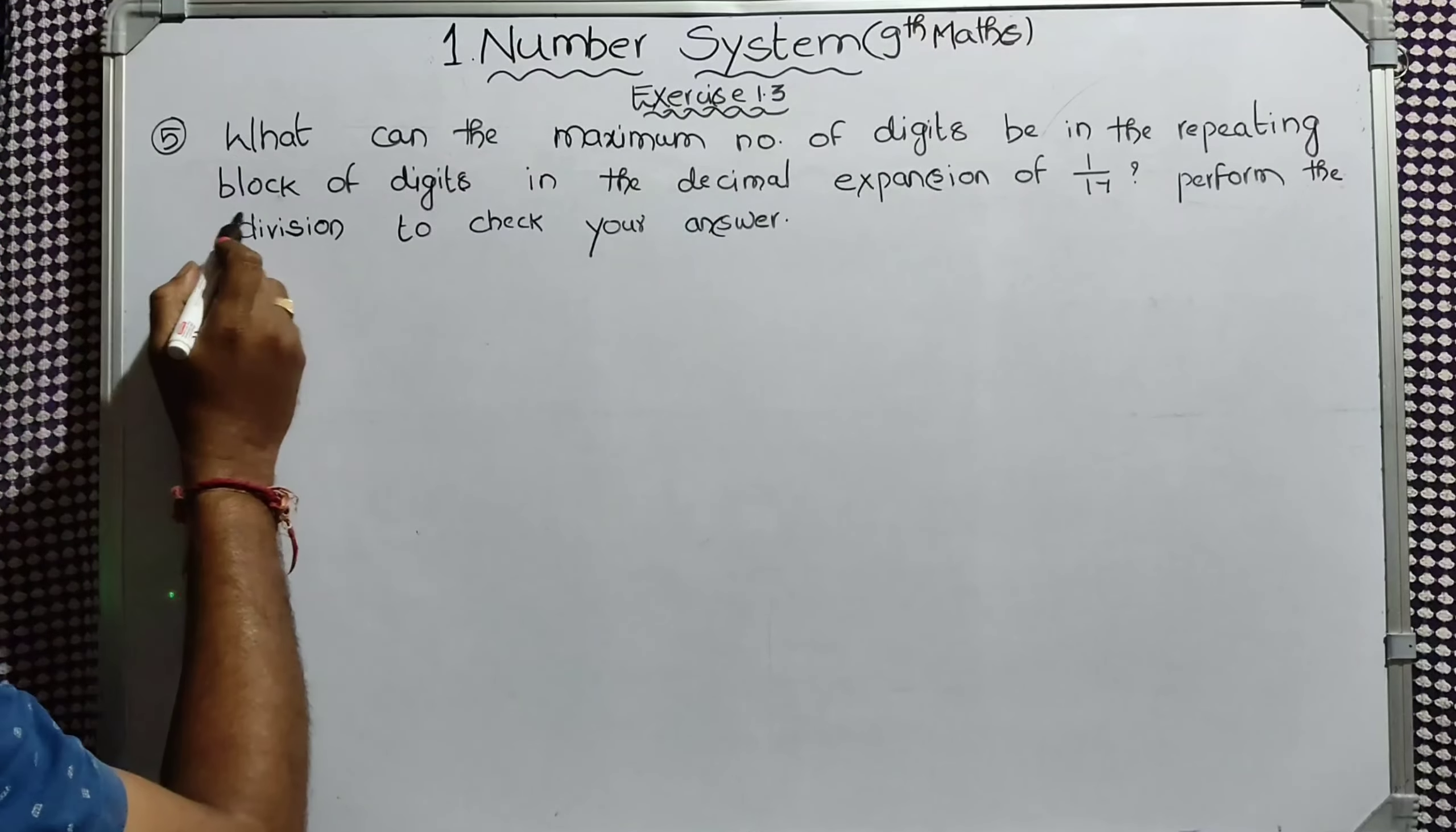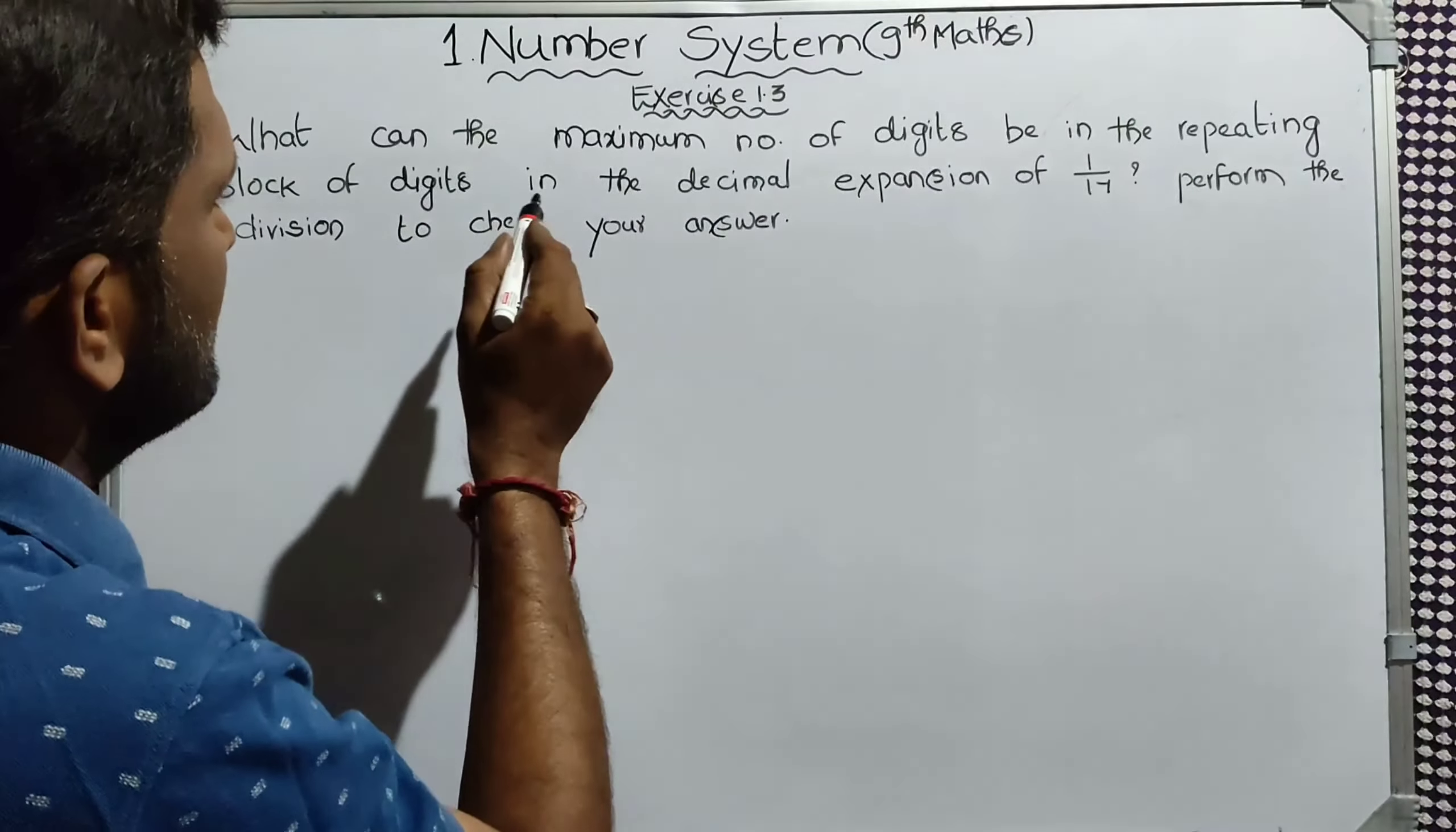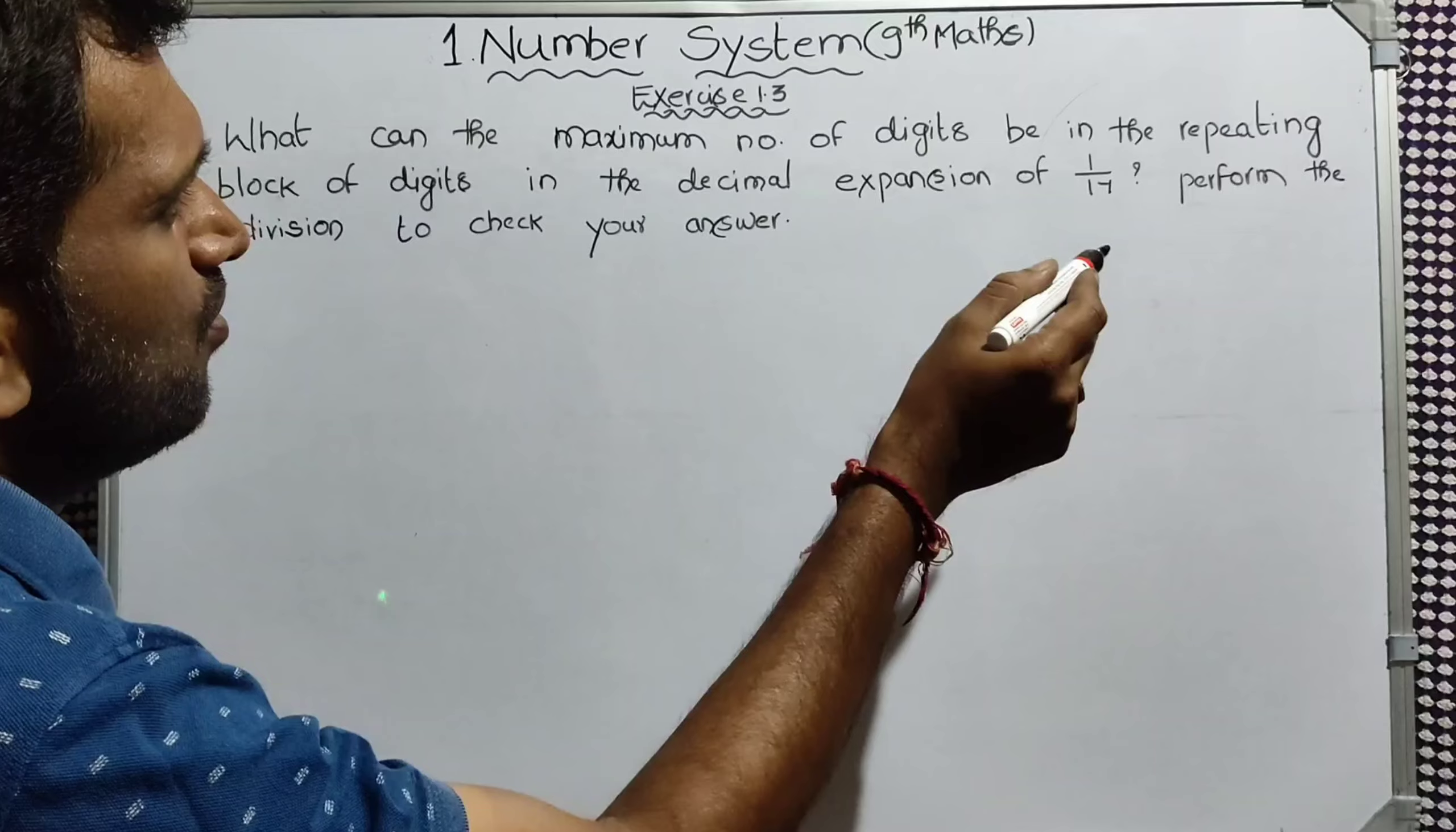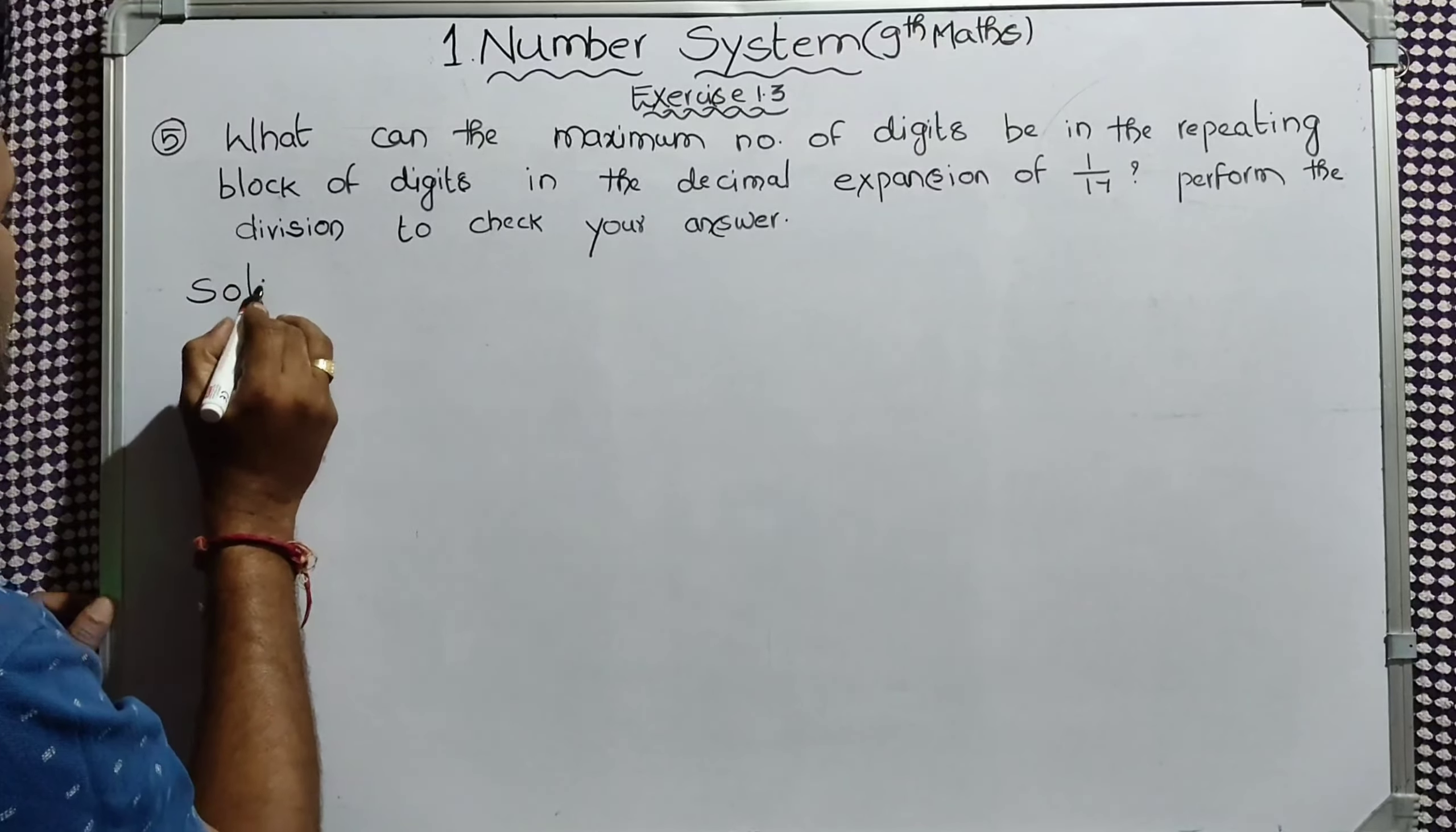Problem: What can the maximum number of digits be in the repeating block of digits in the decimal expansion of 1 by 17? Perform the division to check your answer.